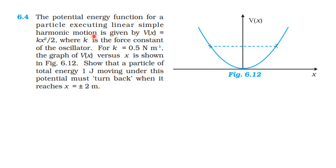From the NCERT textbook, from the topic work, energy, and power, let us continue exercise sum 6.4. The potential energy function for a particle executing linear simple harmonic motion is given by V of x equals k x squared by 2, where k is the force constant of the oscillator. For k equal to 0.5 newton per meter, the graph of V of x versus x is shown in the figure. Show that a particle of total energy 1 joule moving under this potential must turn back when it reaches x equal to plus or minus 2 meter.